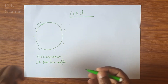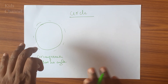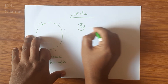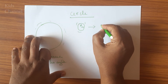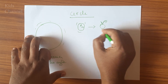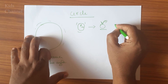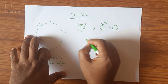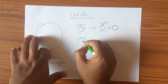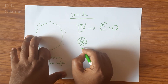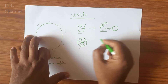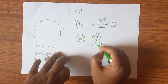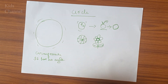Now we will see some of the objects that look like a circle. This looks like a circle. This looks like a circle. This looks like a circle. Wheel — cycle wheel, car wheel — these all look like a circle. And sunflower also looks like a circle.